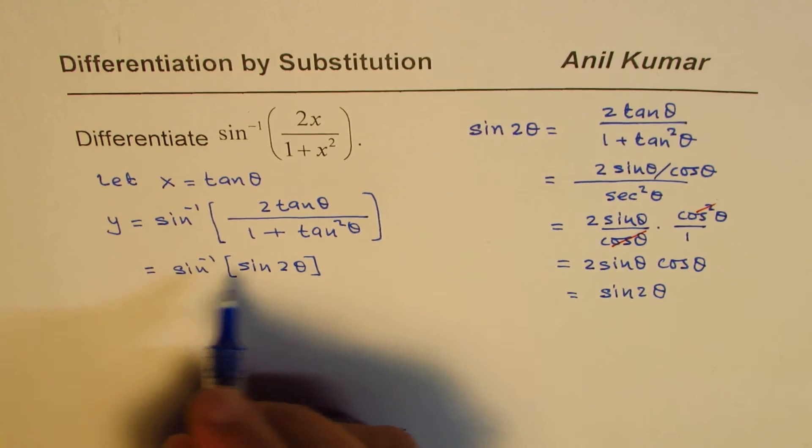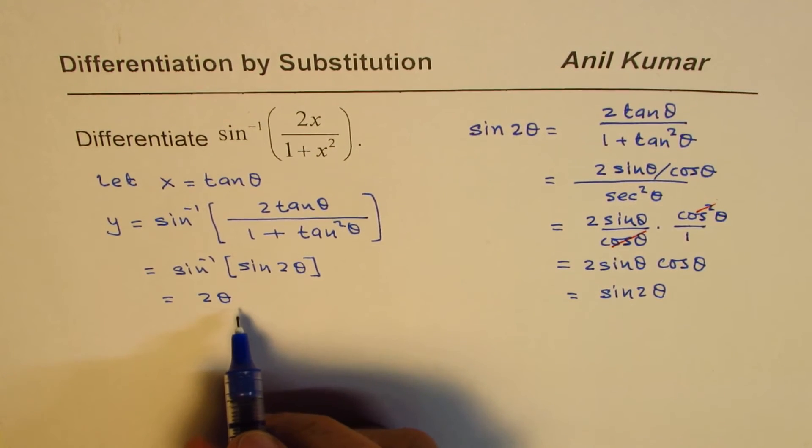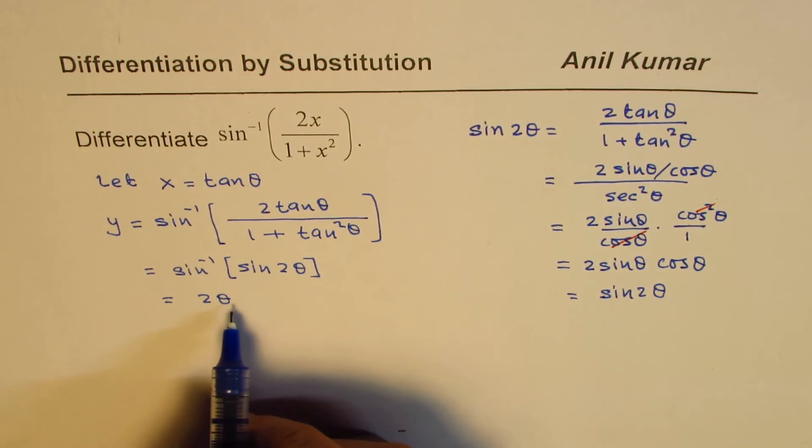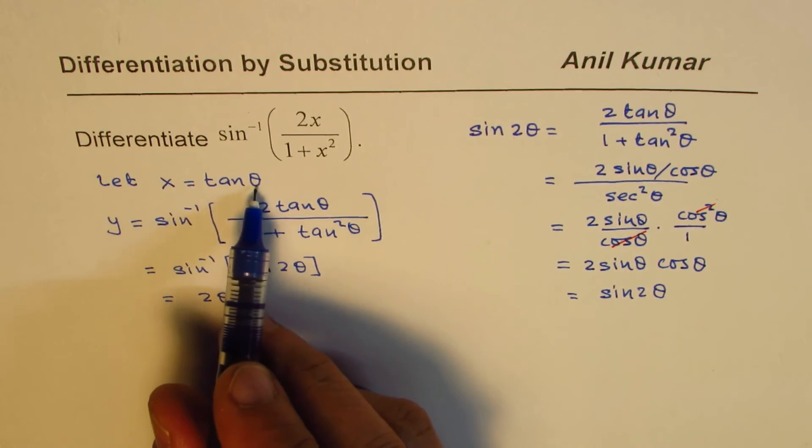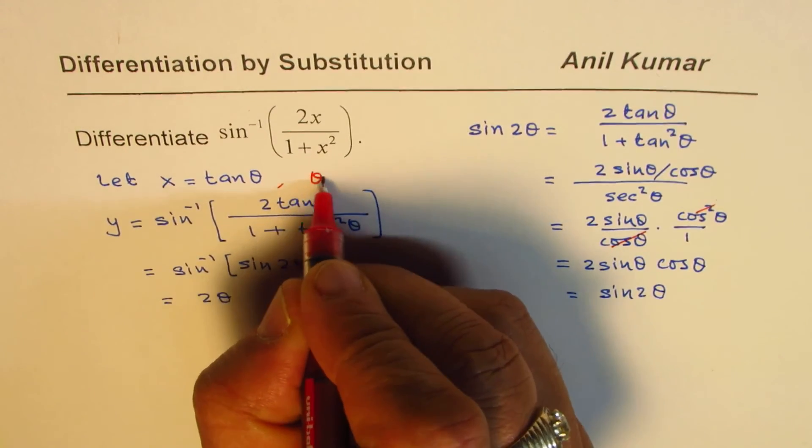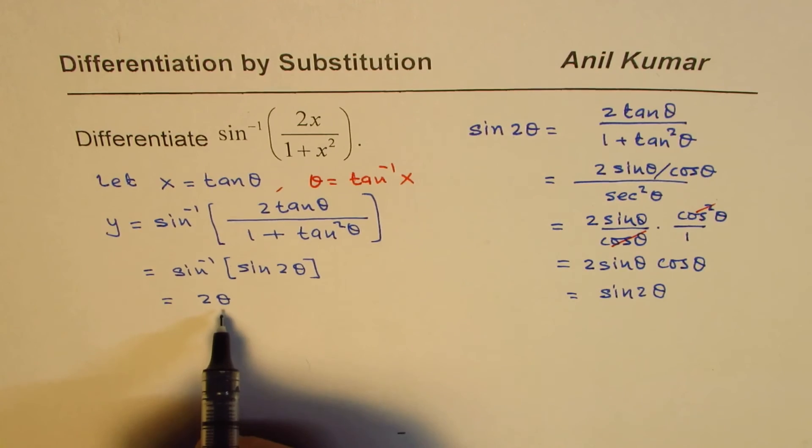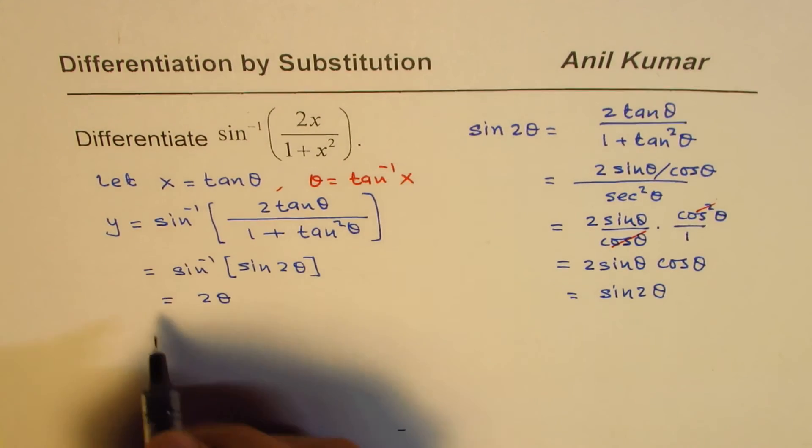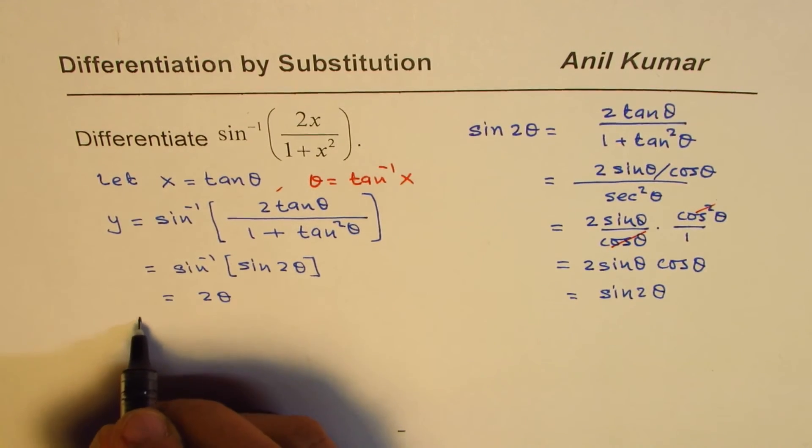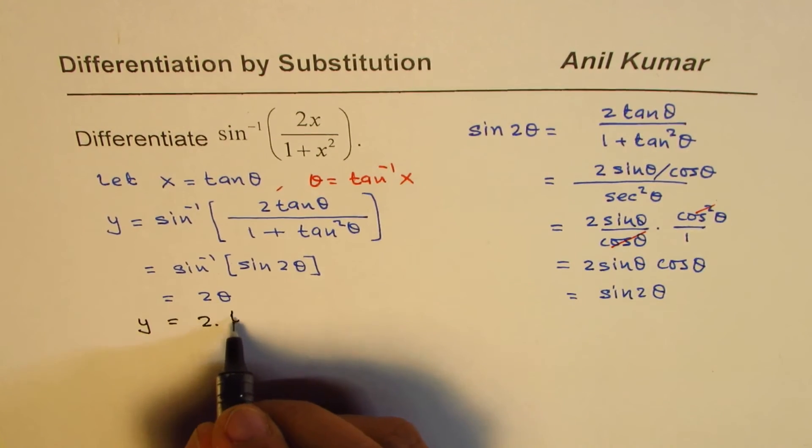Sine inverse of sine 2 theta will be 2 theta. Now from here, we can actually write what theta is. As you can see, x is tan theta, so theta equals tan inverse x. We'll replace this and write y equals 2 times tan inverse x.